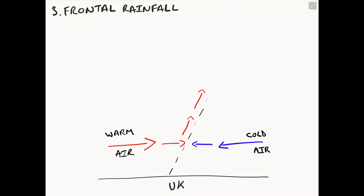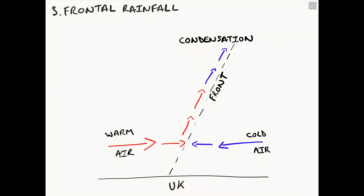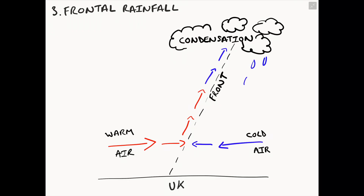This creates our front — the boundary line between our two air masses. The warm air, as it travels high into the atmosphere, will again cool and form condensation, these water vapour droplets creating clouds. The clouds eventually will release precipitation — rain, hail, sleet and snow.